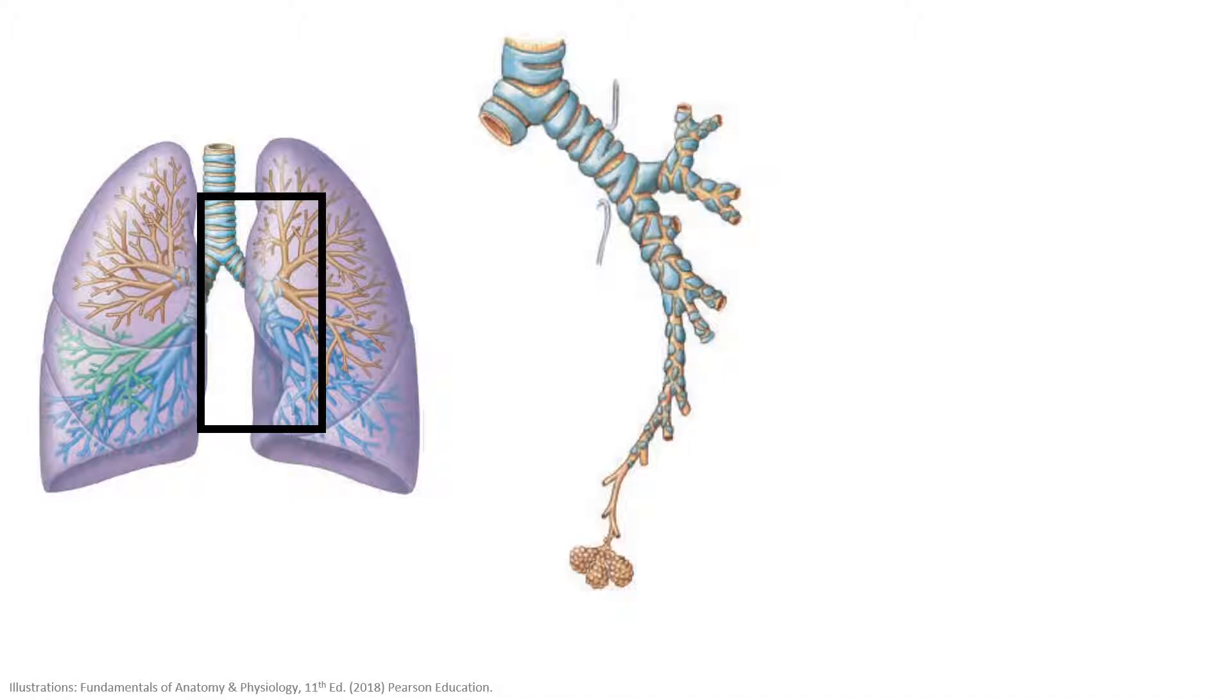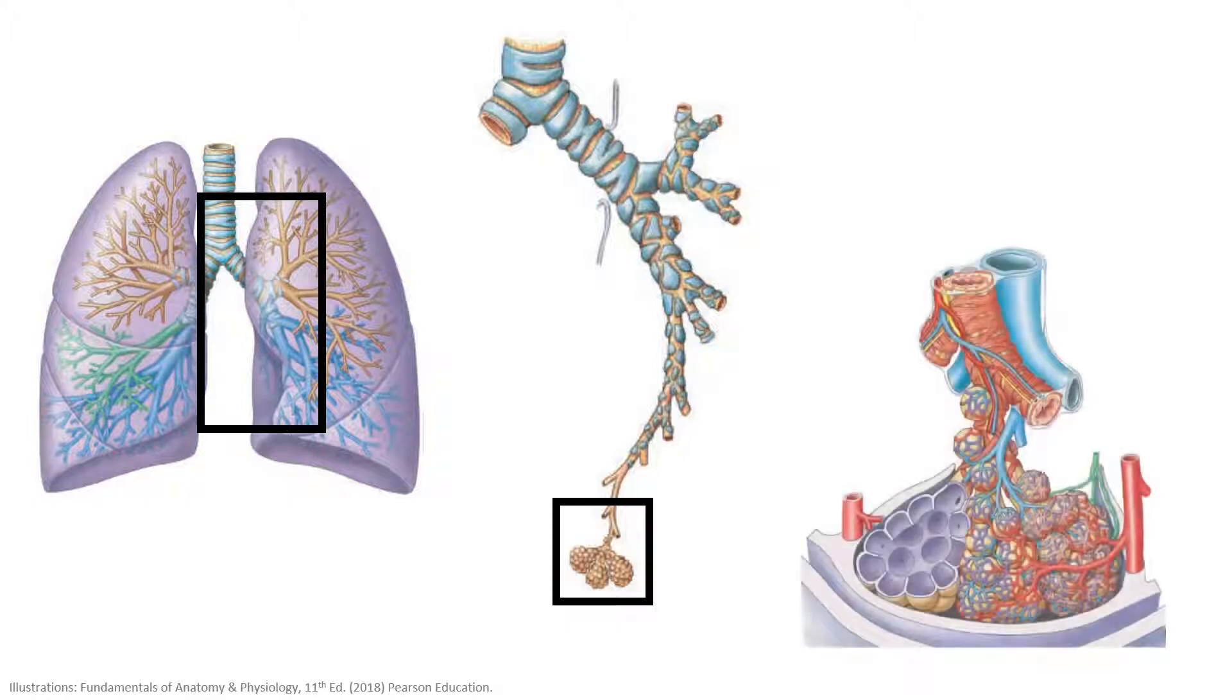Then, the bronchi begin to segment into smaller and smaller passages called bronchioles. All airway passages terminate into a pulmonary lobule filled with alveoli. When we zoom in even further, we can see one of these lobules and the clusters of alveoli that are surrounded by capillary blood vessels.